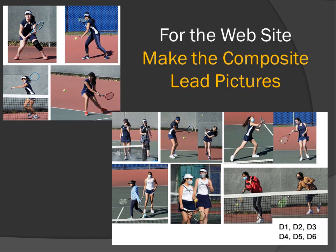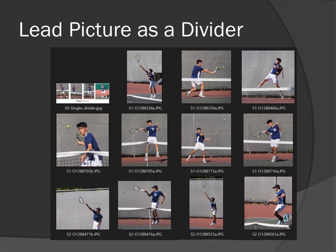For the web, make the composite lead picture. Like we did for the doubles, we do the same thing for the singles — we make a composite picture with all of the singles on one picture and all of the doubles in another picture. This will be the lead picture, used as a divider. The lead picture is S0, which comes before all the other S's. So in this series you have S0, the singles divider, then S1 for first singles, then S2 for second singles.